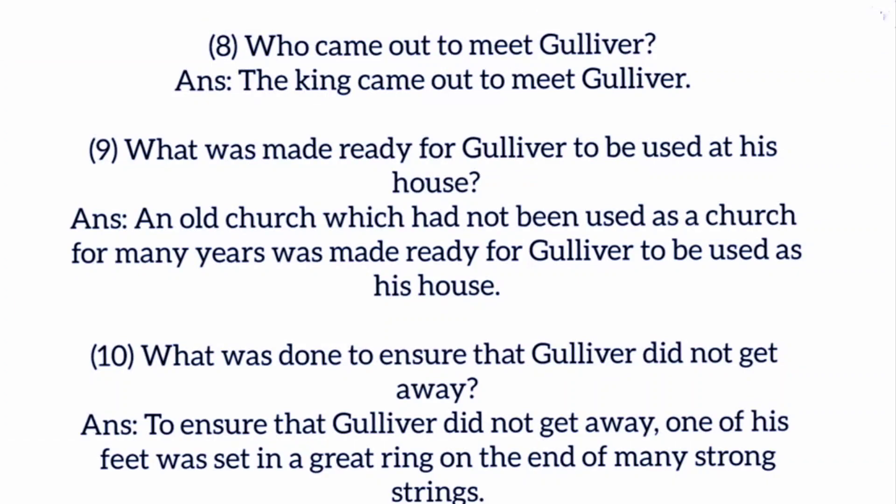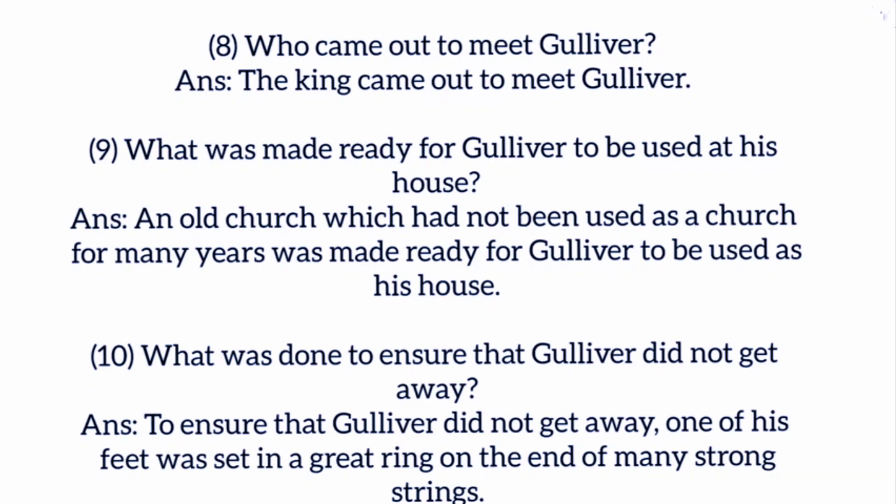Who came out to meet Gulliver? The king came out to meet Gulliver. What was made ready for Gulliver to use as his house? An old church which had not been used for many years was made ready for him. What was done to ensure Gulliver did not get away? One of his feet was set in a great ring on the end of many strong strings.